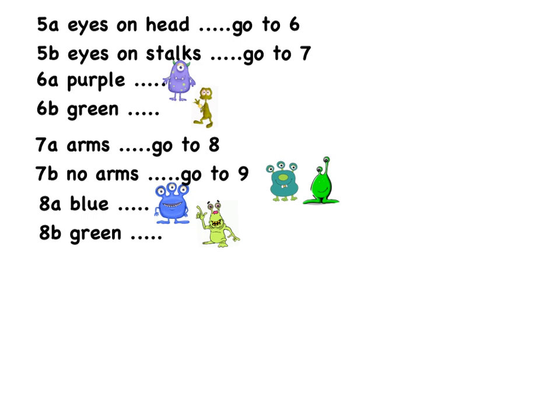Notice that we have green again, but we've gotten here in a different pathway, so we won't be confused. We're never going to jump directly to green — we're going to have to choose legs, and then eyes on the head or eyes on the stalk, so we will distinguish between those two.